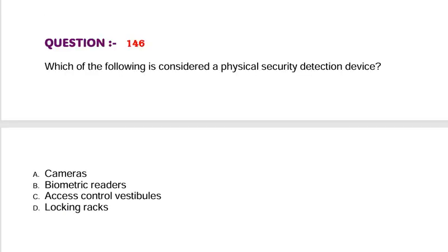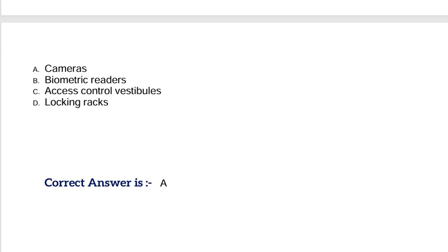Question: Which of the following is considered a physical security detection device? Option A, cameras. Option B, biometric readers. Option C, access control vestibules. Option D, locking racks. Correct answer is Option A.